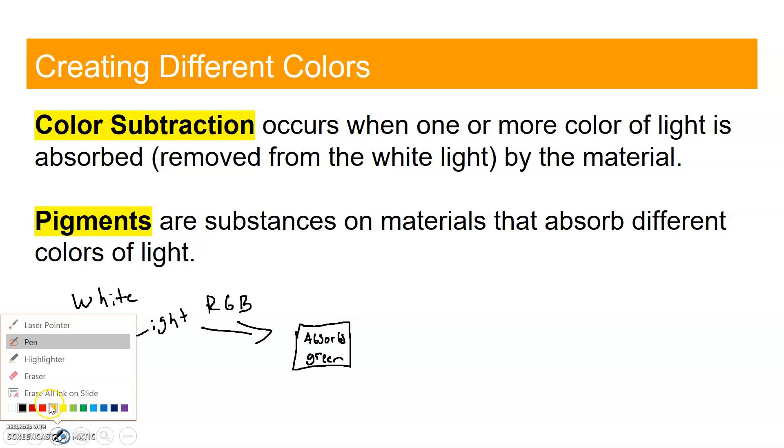Let me color code this so you can see it better. So you have red coming in, and then you have green coming in, and then you have blue. Then if this absorbs green, that means the only thing that's coming back out is blue and red.